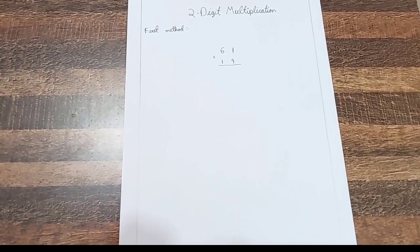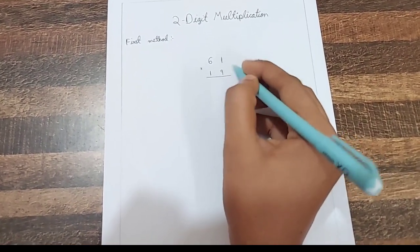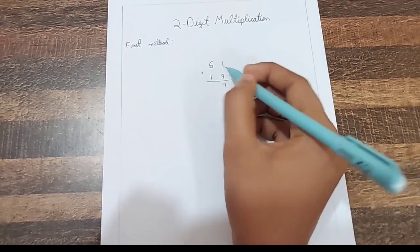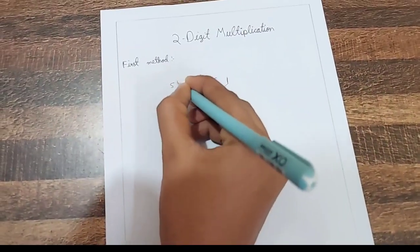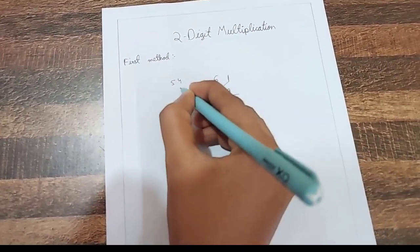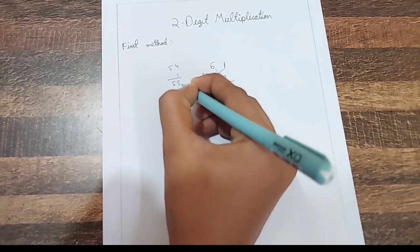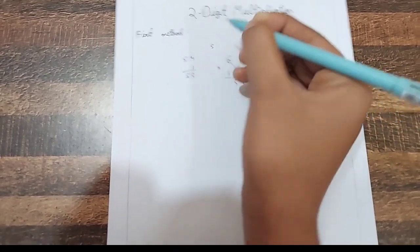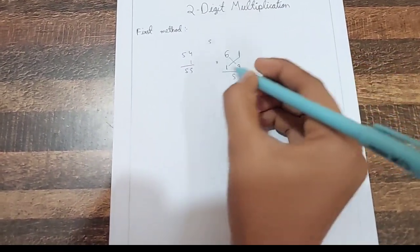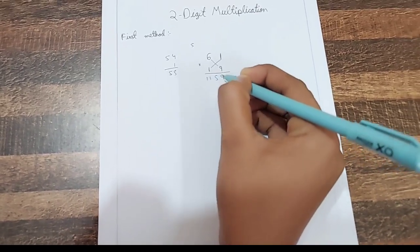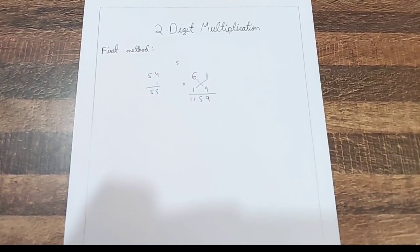So let's take an example: 61 into 19. First multiply 1 into 9, which is 9. Then cross multiply the numbers: 6 into 9 is 54 and 1 into 1 is 1, so 54 plus 1 is 55. Take this 5 here and carry the other 5. Now 6 into 1 is 6, and 6 plus 5 is 11. So 1159 is the product of 61 into 19. Easy right?